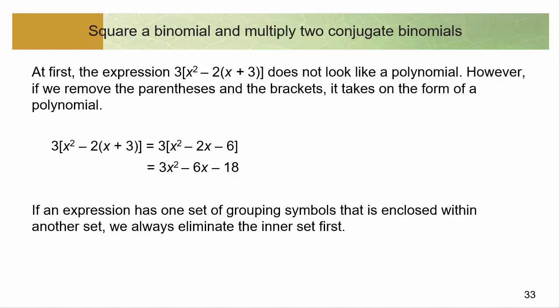Here's another example or two — this is just reminding us that order of operations matters. When we have parentheses, we always have to do the inner parentheses first and work our way outward. So if we have something with nested parentheses, first we do the inside stuff first, which means first we distribute through by this negative 2. That's where we get x² − 2x, and then minus 6. Now the inner parentheses are gone, and we can work on the outer parentheses — which just means distributing the 3 through.